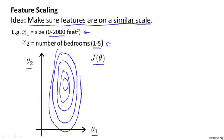Except that with a 2,000 to 5 ratio, it can be even more skewed - very tall and skinny ellipses, or these very tall, skinny ovals can form the contours of the cost function j of theta.